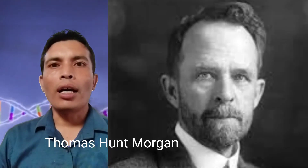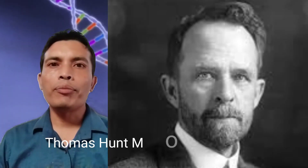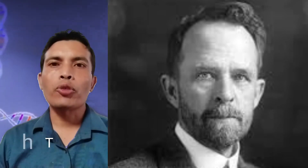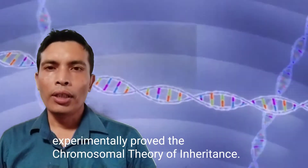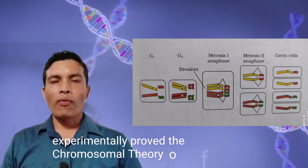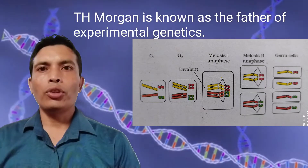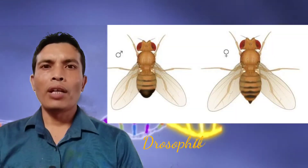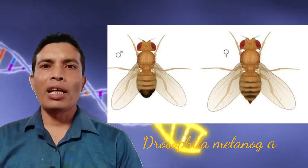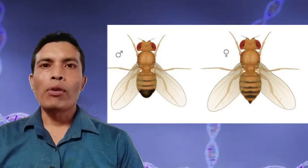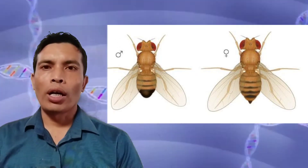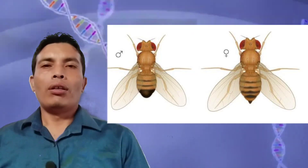Now let us have experimental verification of the chromosomal theory of inheritance. Thomas Hunt Morgan experimentally proved the chromosomal theory of inheritance, so he is known as the father of experimental genetics. Thomas Hunt Morgan selected the fruit fly, scientific name Drosophila melanogaster, for his experimental work.